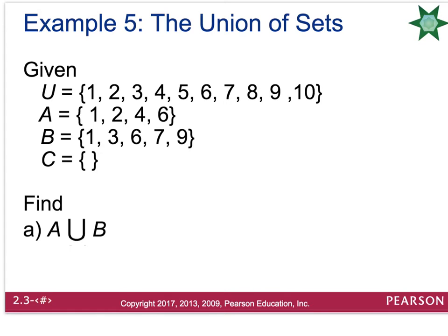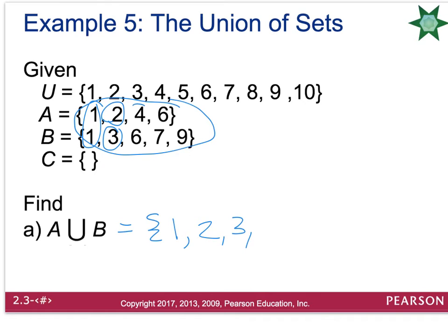Let's look at an example. The universal set is the numbers 1 through 10. A is {1, 2, 4, 6} and B is {1, 3, 6, 7, 9}. Find A union B. Imagine bringing these two sets together. Notice that 1 occurs in both sets — you don't need to list it twice, just once. So combining: 1, 2, 3, 4, 6, 7, 9. This set represents the union of A and B.